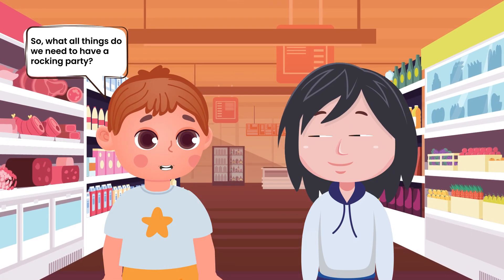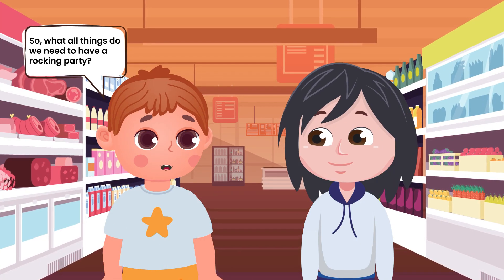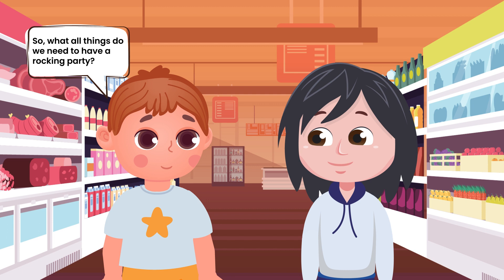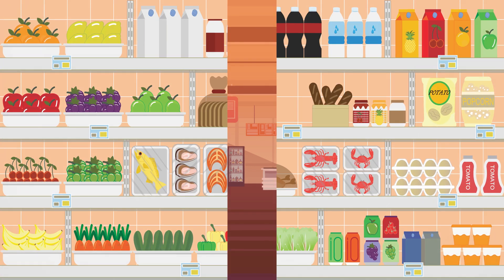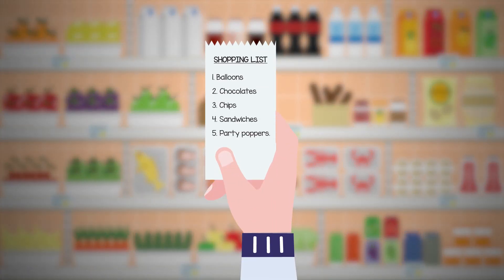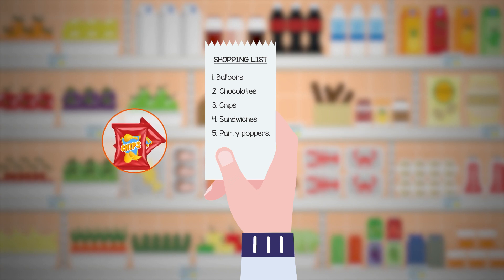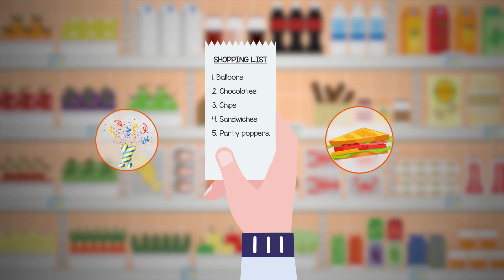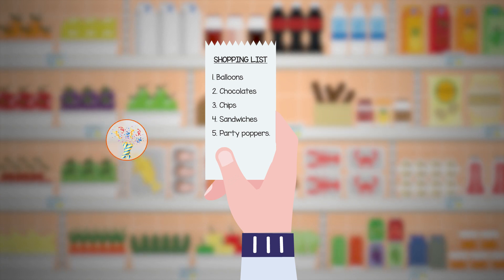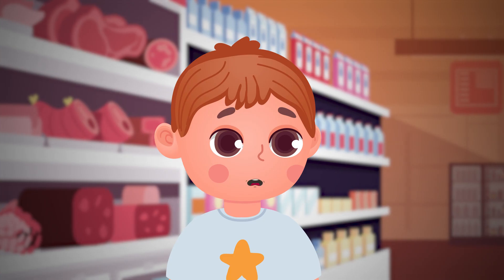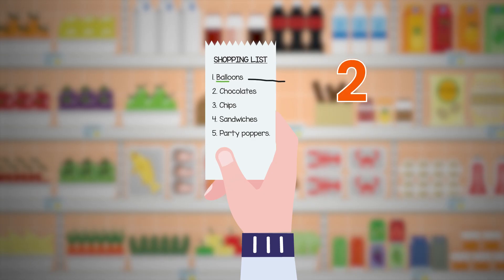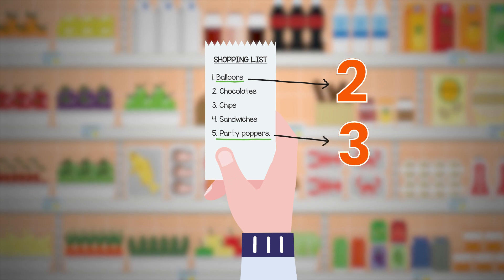What all things do we need to have a rocking party? We'll need to buy balloons and chocolates and chips and sandwiches and party poppers. I got 2 packets of balloons and 3 party poppers.